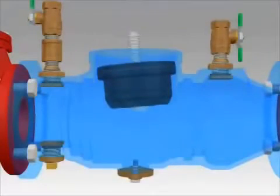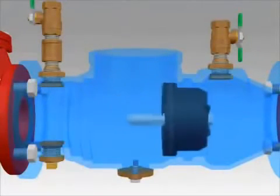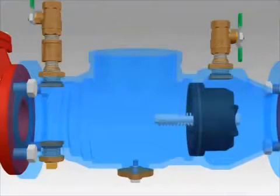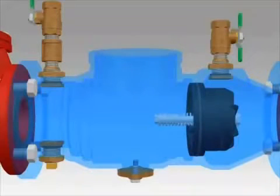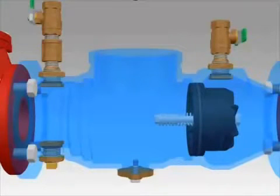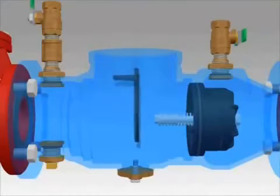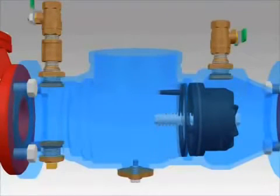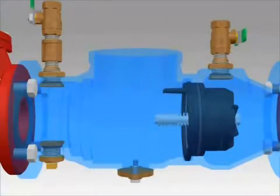After servicing the number 2 check, install it in the body making sure it is completely seated. The groove for the seat retainer should be completely exposed. If valve was not drained, water may squirt from the number 4 test cock as the check is installed. Close the number 4 test cock to hold the check in place. Install the plastic retainer by inserting one end into the body groove and then sliding your hand around the face of the retainer, pushing it into the groove as you go.